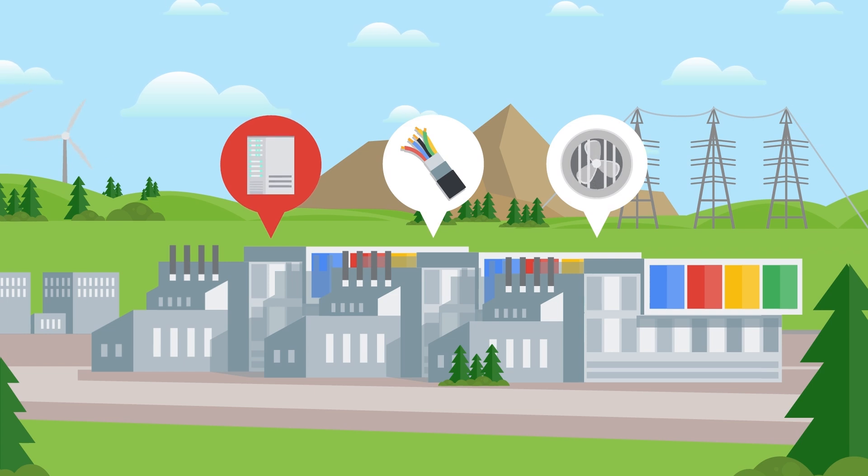Red blocks are server halls with compute and networking, green are power supply, and blue are cooling infrastructure.